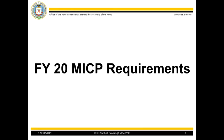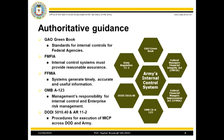We will cover FY20 MICP requirements. The Army's Internal Control System is governed by six main pieces of authoritative guidance: the GAO Green Book, FMFIA, FFMIA, OMB Circular A-123, DODI 5010.40, and AR 11-2.